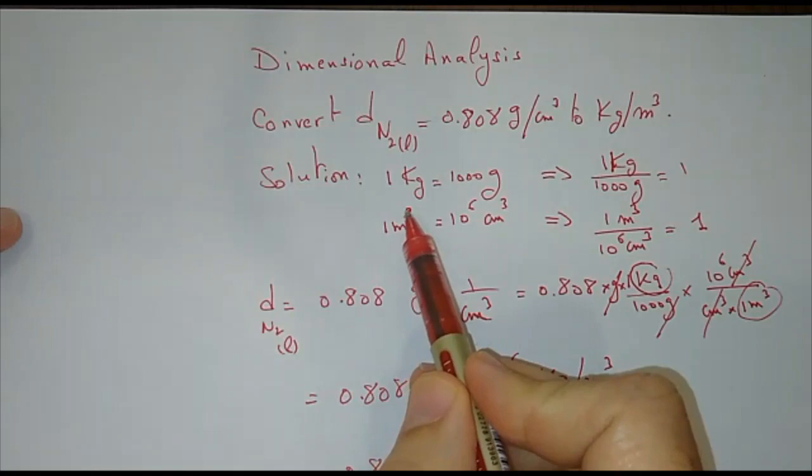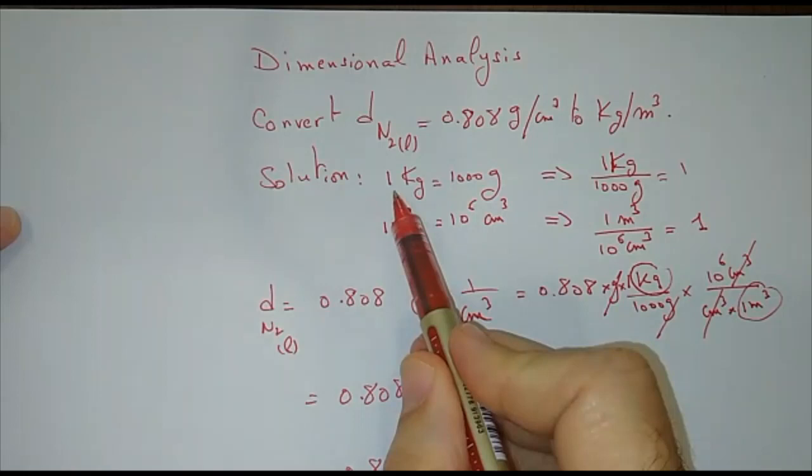To do this properly, I need the appropriate conversion factors or ratios. I know that 1 kilogram is 1,000 grams and 1 meter cubed is 1 million centimeter cubed.